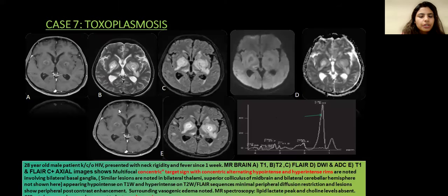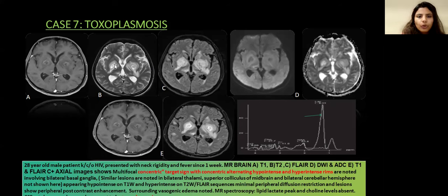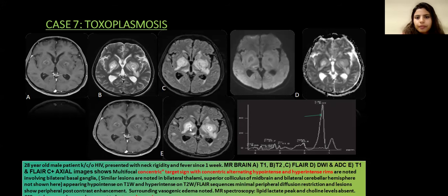Next case: 28-year-old male, known case of HIV, presented with neck rigidity and fever since one week. MR brain T1, T2, FLAIR, diffusion-weighted, T1 and FLAIR post-contrast images showing multifocal concentric target sign with alternating hyper- and hypointensities involving bilateral basal ganglia, appearing hypointense on T1, hyperintense on T2 and FLAIR, showing minimal peripheral diffusion restriction and post-contrast enhancement. On MR spectroscopy, there is a lipid lactate peak while choline levels are absent. CSF cytology confirmed toxoplasmosis.